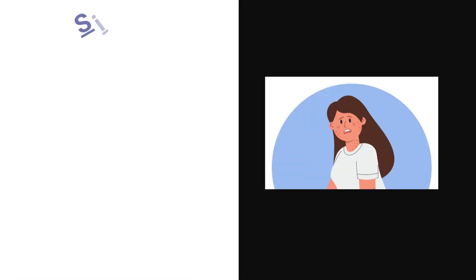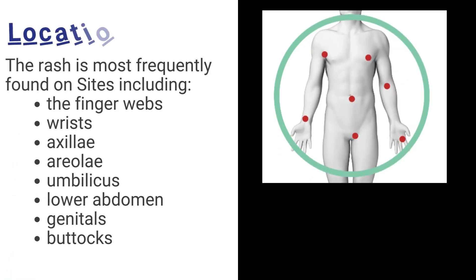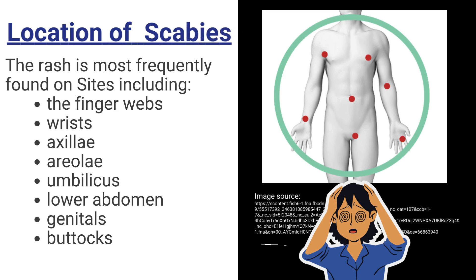Symptoms generally occur within one to four days. The most common signs and symptoms of scabies include intense itching especially at night, pimple-like rash, thread-like burrows or tracks in the skin, red bumpy rashes, sores and blisters. The rash is most frequently found on the finger webs, wrists, axillae, areola, umbilicus, lower abdomen, genitals, and buttocks.